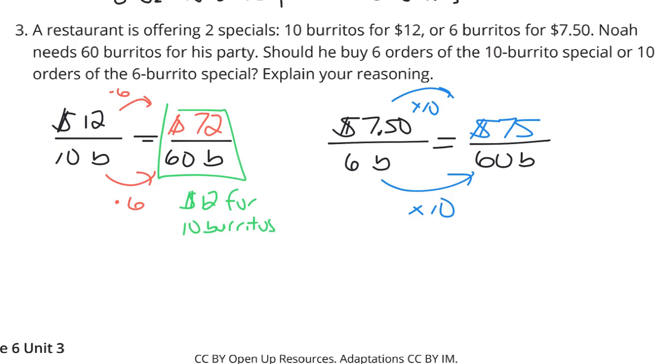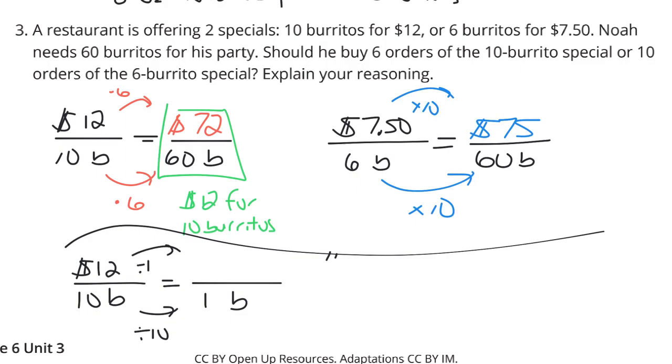Now, since this lesson is called Equivalent Ratios Have the Same Unit Rate, let's take a peek at the unit rates here. If we looked at $12 for 10 burritos and thought to ourselves, self, what does one burrito cost? Self, divide by 10 here. And you get $1.20 per one burrito at our winning restaurant. And if we were to take $7.50 and our 6 burritos and get that to 1 burrito, $7.50 divided by 6 is $1.25. So, it is $0.05 more expensive per burrito. And so, of course, just one more way of showing that the $12 for 10 burritos is a better buy.